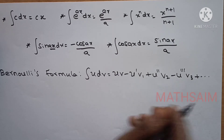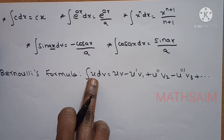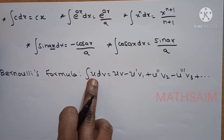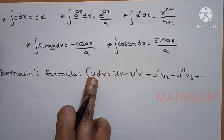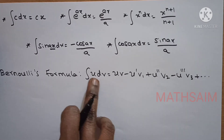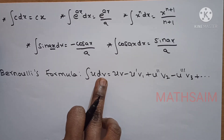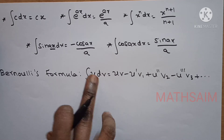An alternating sign is going to be used. Okay? Integral u dv is equal to uv minus u'v1 plus u''v2 minus u'''v3, and so on. So, if u is going to be selected, what criteria, what rules? Let's see what rules.